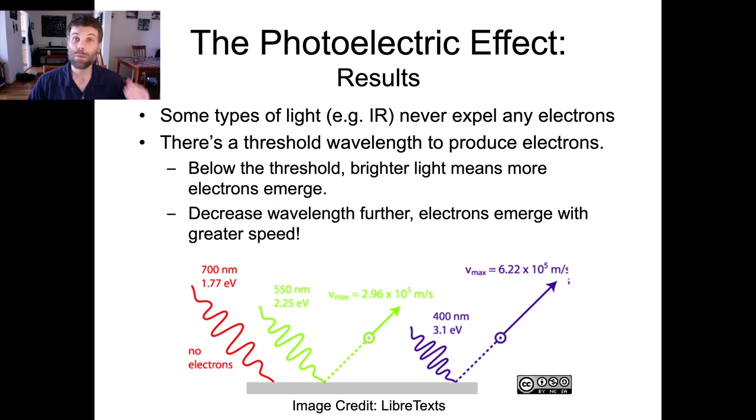So let's have a look at what was actually discovered when physicists began to investigate this photoelectric effect. What they found was much more complicated than you would predict naively just knowing the wave theory of light. For example, some types of light, like infrared light, never expel any electrons. No matter how bright you make the light, you're never going to start producing any photoelectrons from your metal. And in general, for all metals, there is a threshold wavelength in order to produce photoelectrons. So starting from long wavelength in the infrared, you go no electrons, no electrons, no electrons, and then suddenly you hit that threshold and boom, you have electrons coming out. So it's a complete step function. You have none, and then you have some, and there's no real transition in between those two states.